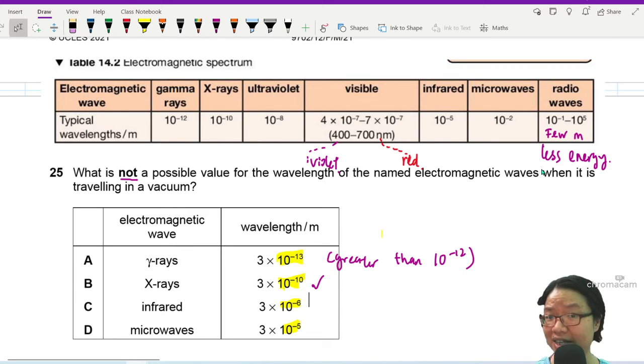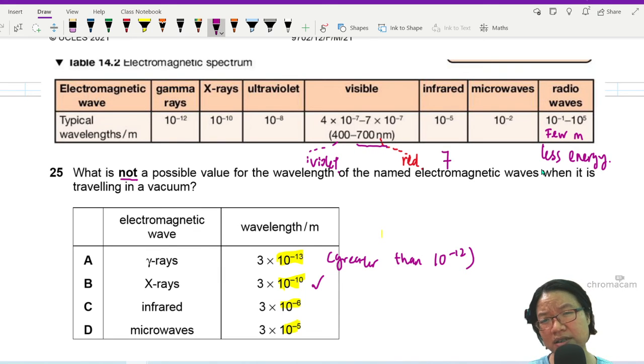When it comes to red color, 700 nanometers, this one is 7 times 10 to the power of negative 7, so not yet at negative 6. This one is possible because negative 6 is in between here. The smallest one is 7 times 10 to the power of negative 7, so negative 6 is still possible.